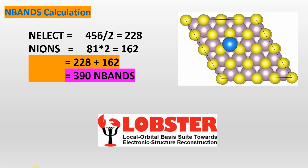Now we can calculate the number of bands. The number of electrons is 456 divided by 2, which gives 228. The number of ions is 81 multiplied by 2, equal to 162. If you add these two values you will get the total number of bands.